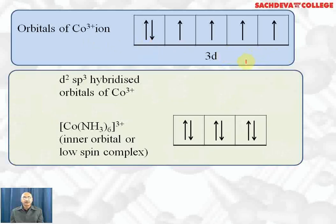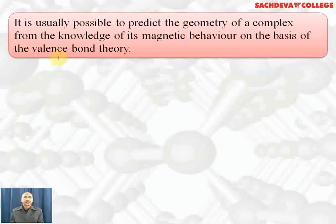If we have a strong field ligand like ammonia, pairing of electrons takes place in the d orbitals, and we are left with two empty d orbitals which can be used for hybridization. This leads to an inner orbital complex or low spin complex.